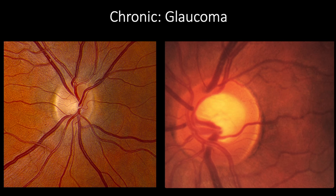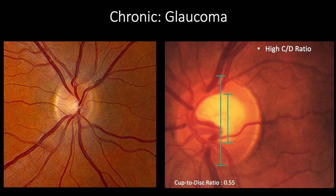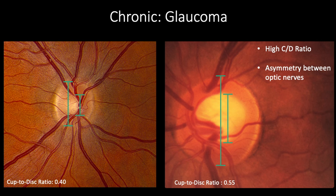The final condition we will review is glaucoma, the second leading cause of blindness worldwide. Glaucoma describes a group of progressive conditions characterized by cupping of the optic disc due to retinal ganglion cell loss. Key findings include a high cup-to-disc ratio — the optic disc on the right side of the screen is experiencing greater cupping compared to the one on the left. A difference of 0.2 or more between optic nerves raises suspicion of possible glaucoma.